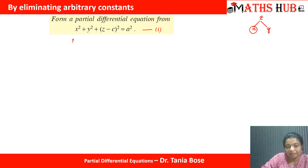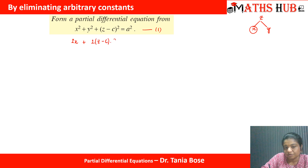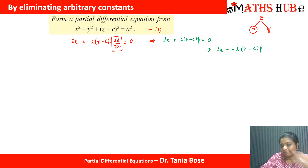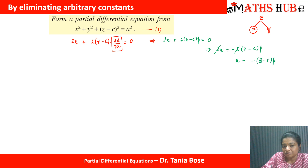Differentiating with respect to x: derivative of x² gives 2x, derivative of y² gives 0 (y is constant), and derivative of (z − c)² gives 2(z − c)·(del z/del x) by chain rule, all equal to 0. Using the notation p for del z/del x, we get 2x + 2(z − c)p = 0, which simplifies to x = −(z − c)p.